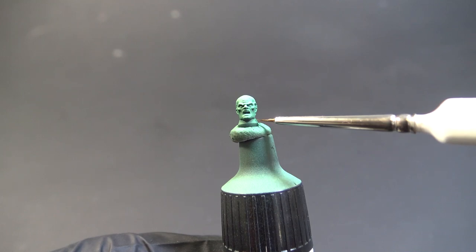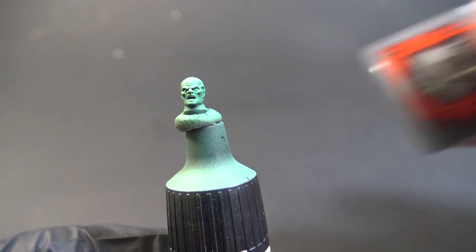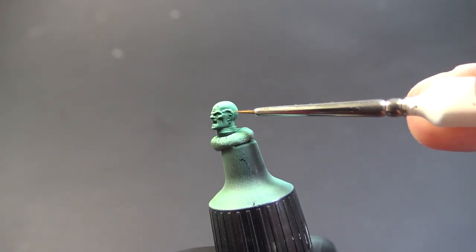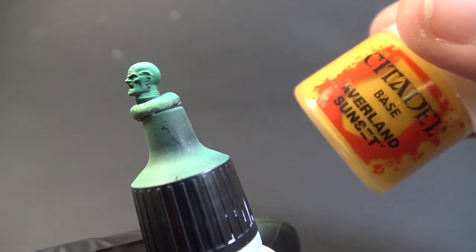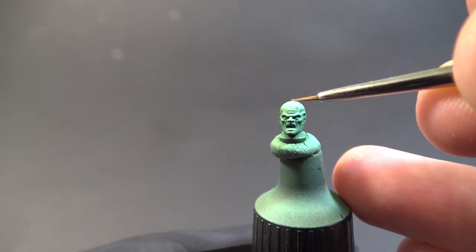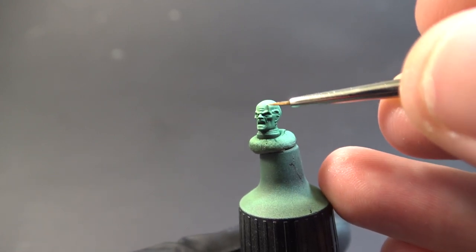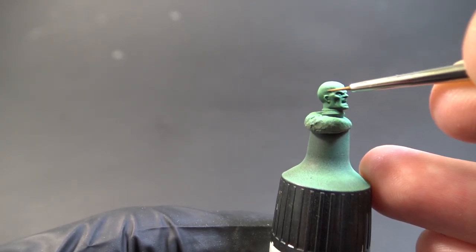Next, I'm painting armored neck with Leadbelcher and washing it with Agrax Earthshade. And for the cable I'm using Averland Sunset. I'm also using Reikland Fleshshade to wash his forehead, warts, ear area and veins.